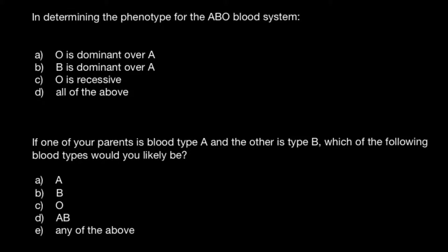Here's the first question: in determining the phenotype for the ABO blood system, here are four answers to choose from. If you're still confused which answer to choose, here is my explanation. In the ABO blood group system, there are three alleles: A, B, and O. Allele A and allele B are codominant, and allele O is recessive for both allele A and B.